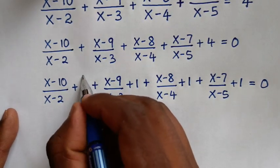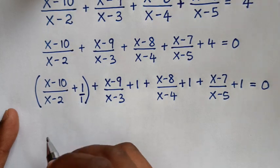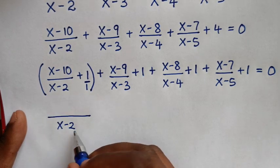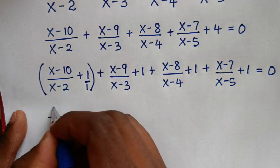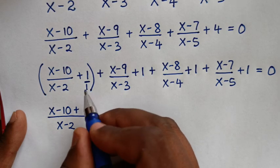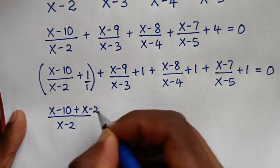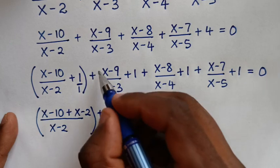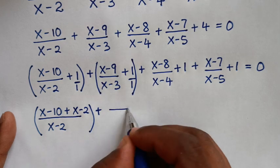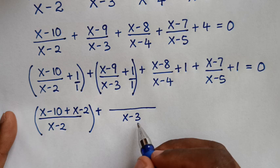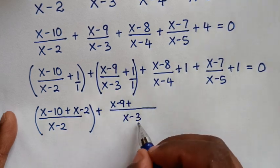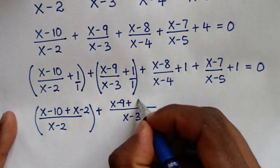In the next step, we combine each fraction with its 1 inside brackets. For the first term, the LCM of x minus 2 and 1 is x minus 2. So it becomes x minus 10 plus x minus 2, over x minus 2. For the second term, the LCM of x minus 3 and 1 is x minus 3. So it becomes x minus 9 plus x minus 3, over x minus 3.